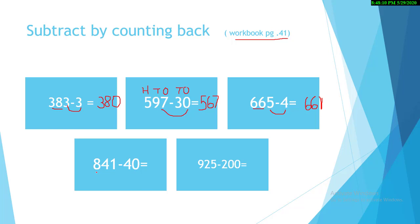The next question is 841 minus 40. I'm sure my brilliant students can do this. Mention the places: ones, tens, and hundreds. Subtract ones with ones: 1 minus 0 — the answer is 1. Subtract tens with tens: 4 minus 4 equals 0. And 8 is the number that will come as it is.